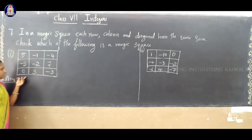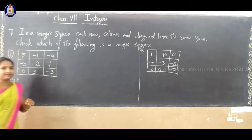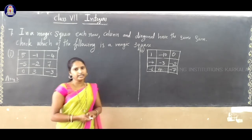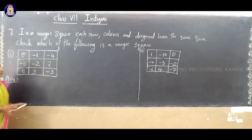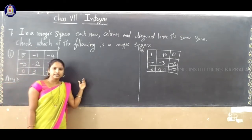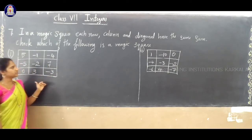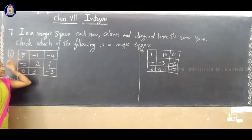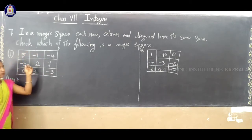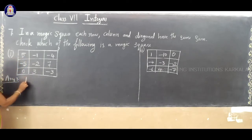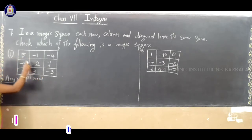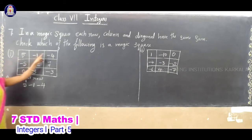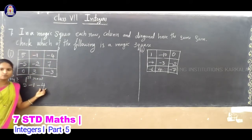So, after adding these numbers you must get the same answer in each row, each column and each diagonal. If you get the same answer, then we can say that the given square is a magic square. So, first we will check whether the first square is a magic square or not. You have to consider each row and add each row.